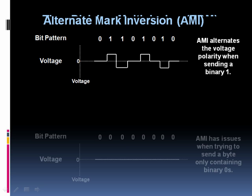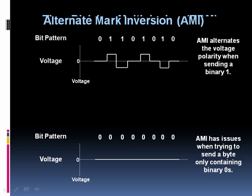AMI can have an issue when it tries to send a byte containing all 0s — eight 0s in a row. If we have the absence of voltage for this period of time, AMI can sometimes get confused about when it's seen the end of the 8th bit. After all, we're not varying — it's just silence for 8 straight bits. AMI has a problem with that.